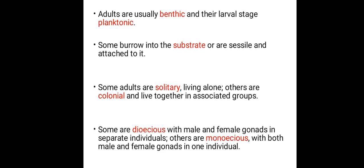Another crucial fact about proto-chordates is that some of them are dioecious — meaning they have both male and female gonads in separate individuals. Meanwhile, others are monoecious, meaning they have both male and female gonads in one individual. So for proto-chordates, know that they are both dioecious and monoecious.